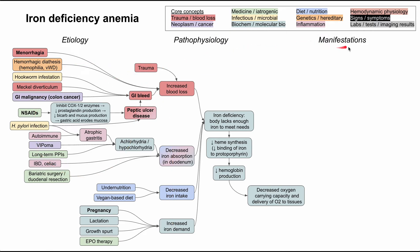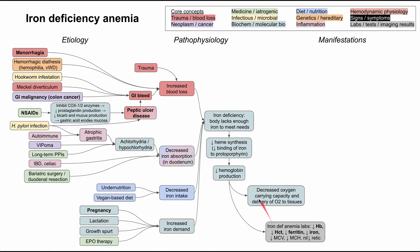Now for the manifestations. Decreased hemoglobin production is visible on blood work: you'll see decreased hemoglobin and hematocrit on CBC, decreased ferritin indicating low iron stores, and decreased free iron in the blood. Red blood cells will have a low MCV (low mean corpuscular volume), making them smaller, and a low mean corpuscular hemoglobin, making them paler. You'll also see a normal or low reticulocyte count, since iron deficiency tones down production of reticulocyte precursors to red blood cells.